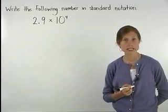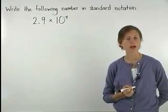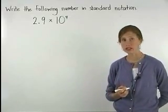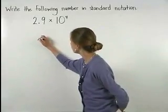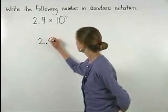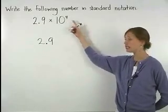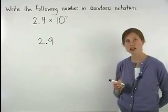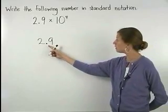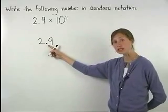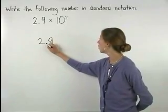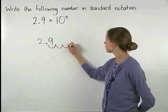To write 2.9 times 10 to the fourth power in standard notation, we first begin with 2.9. Next, we look at the exponent, which in this case is positive 4. This tells us to move the decimal point 4 places to the right: 1, 2, 3, 4.